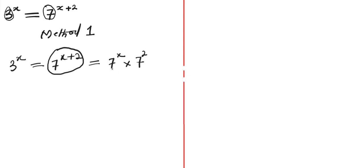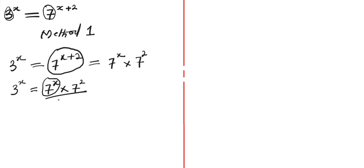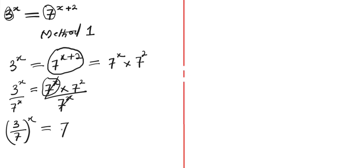You know from the law of indices, when the bases are the same and you have a multiplication sign, then you can add the powers. So now we apply the law here — if we add the powers and take one of these bases, we get back to this. So 3 to the power of x equals 7 to the power of x times 7 to the power of 2. The next step is to divide both sides of the equation by 7 to the power of x. This will become 3 over 7, all to the power of x, and on the right side this cancels, leaving 7 to the power of 2.